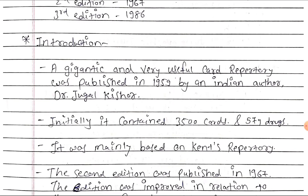Introduction: a gigantic and very useful card repertory was published in the year 1959 by an Indian author, Dr. Jugal Kishore. Initially it contained 3,500 cards and 579 drugs. It was mainly based on Kent's repertory.